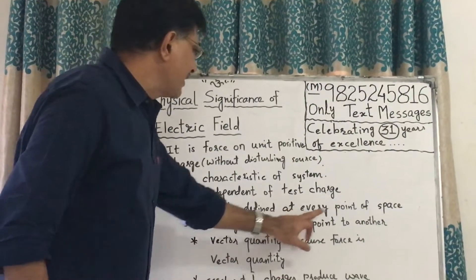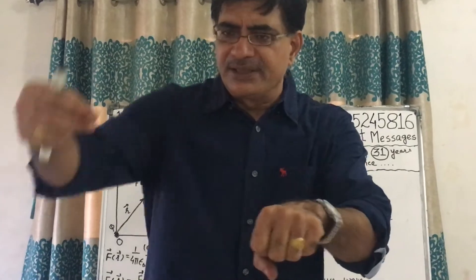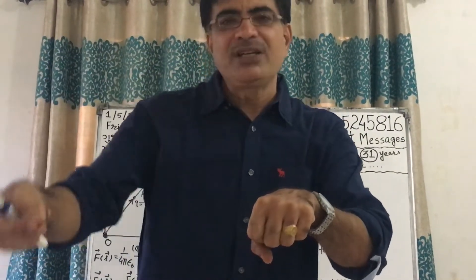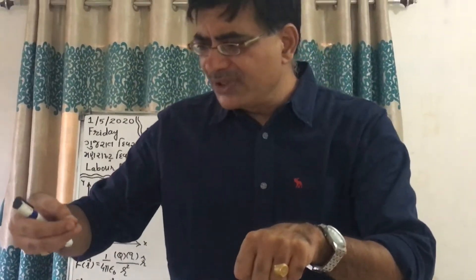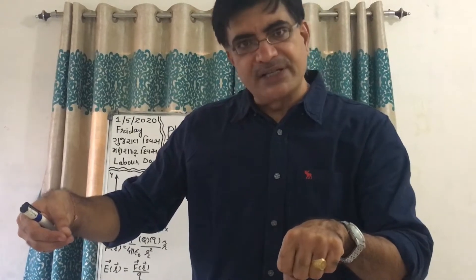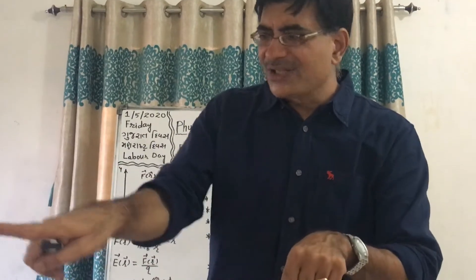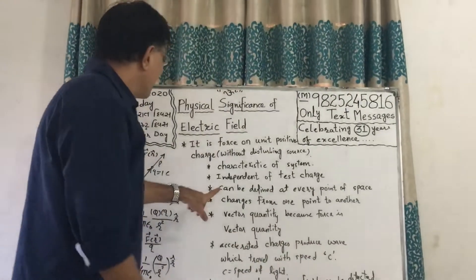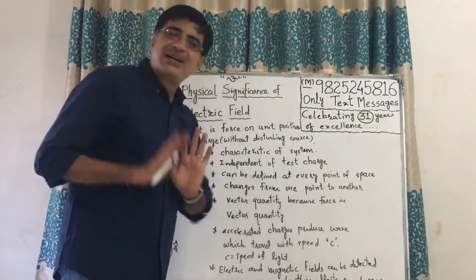Third point: electric field can be defined at every point. This is source charge — we can define electric field here, here, at every point, by putting a test charge. But the electric field due to this source charge will differ at different points. For example, at one centimeter the direction of electric field intensity will be in one direction, and if you check at a different position, the direction will change.